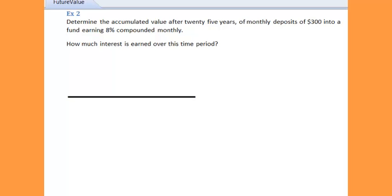Example 2. Determine the accumulated value after 25 years of monthly deposits of $300 into a fund that earns 8% compounded monthly. How much interest is earned over this time period?